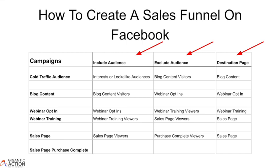At the first step, we'll send cold traffic and exclude people that have already read the blog, and we send them to our blog page. At the second step, we will take everybody that have visited our blog, exclude people that have already opted in for the webinar, and we'll send this traffic to the webinar opt-in page.